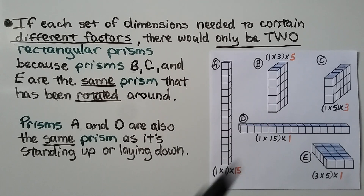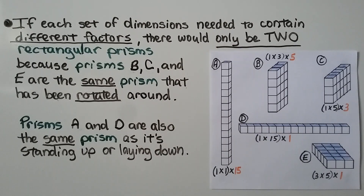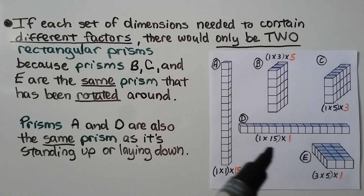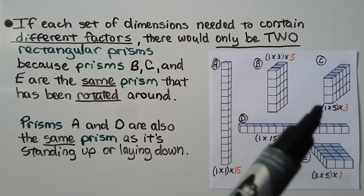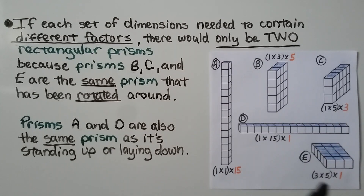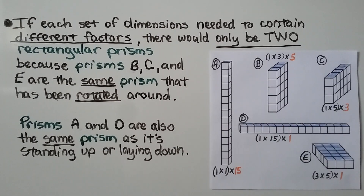Prisms A and D are the same prism — one has dimensions 1, 1, and 15, and so does the other. Prisms B, C, and E all have dimensions 1, 3, and 5. So if each set of dimensions needed to contain different factors, there would only be 2 different rectangular prisms for Emma's 15 cubes.